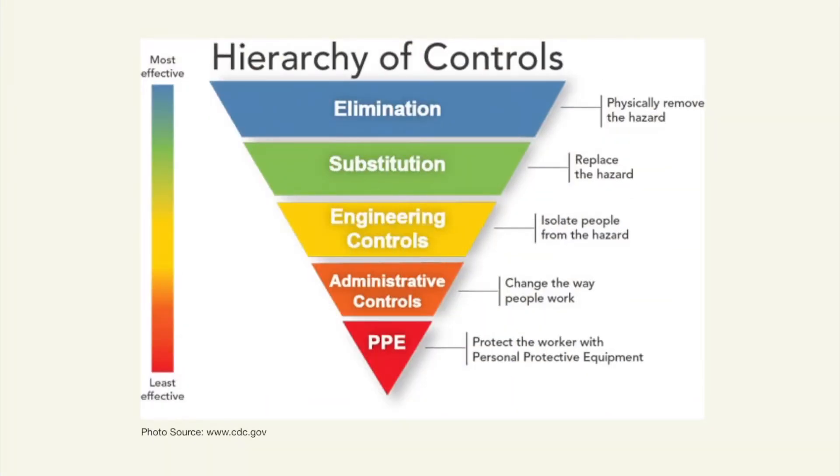A widely accepted system, known as the hierarchy of controls, is used by many organizations to select the most appropriate control for a particular hazard in their workplace. This system, as you can see, is an inverted pyramid with the most reliable control that offers the highest level of protection at the top, while the least reliable control which offers the lowest level of protection is at the bottom.